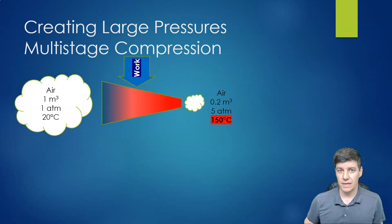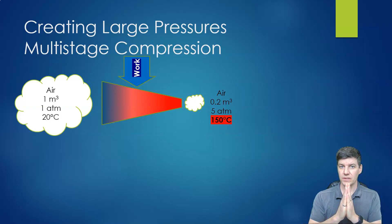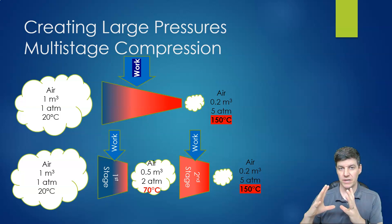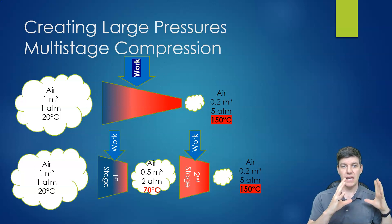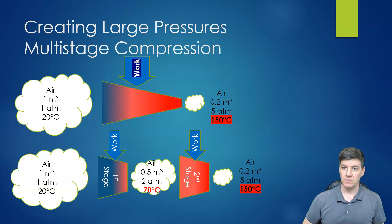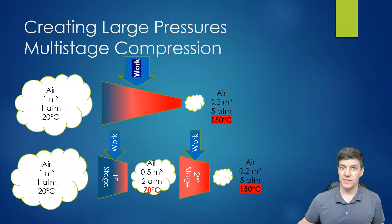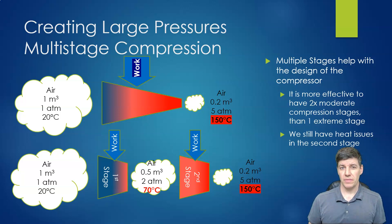So we can break up our compression: instead of one compression stage going the entire way from full volume to minimum volume, we break it up into two separate compressions. We do a moderate compression on the first stage, pass it to the next section, and then do another compression. We could have multiple stages to develop high air pressures. But we run into a problem — our temperature continues to increase through the second, third, and fourth stages. We've solved the physical size issue, but still have an issue with temperature.